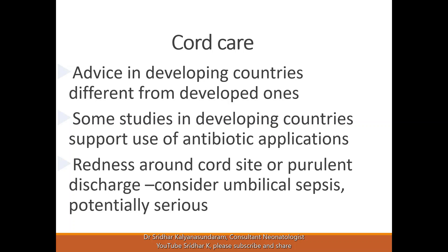Redness around the cord site or purulent discharge — we should consider umbilical sepsis. This is potentially serious because the umbilical vein runs through the liver, and if the infection in the umbilicus reaches the liver, it can be dangerous. There is also a condition called portal hypertension which can present later.